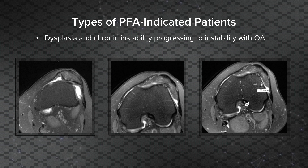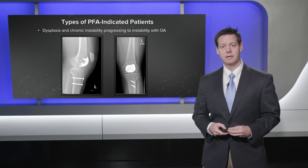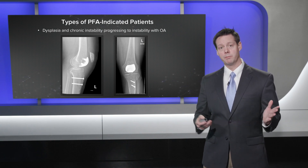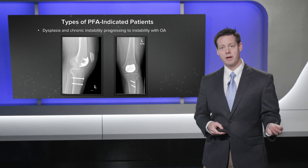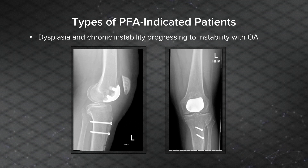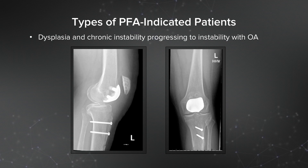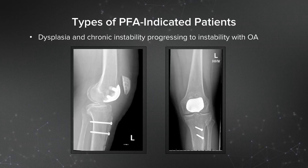Her tibial tubercle trochlear groove distance, as you would expect, is fairly high and in a pathologic range of 25. For her, she also needs a tibial tubercle osteotomy. Because of her hyperlax soft tissue, she had a medial repair through a lateral approach of the arthrotomy, which allows a primary repair on the medial side. In some cases I've even done a medial patellofemoral ligament reconstruction. We do a tibial tubercle osteotomy to bring her alignment back into a much more normal range, and an onlay patellofemoral prosthesis allows us to adjust her patellofemoral morphology, which was part of her problem from the beginning.